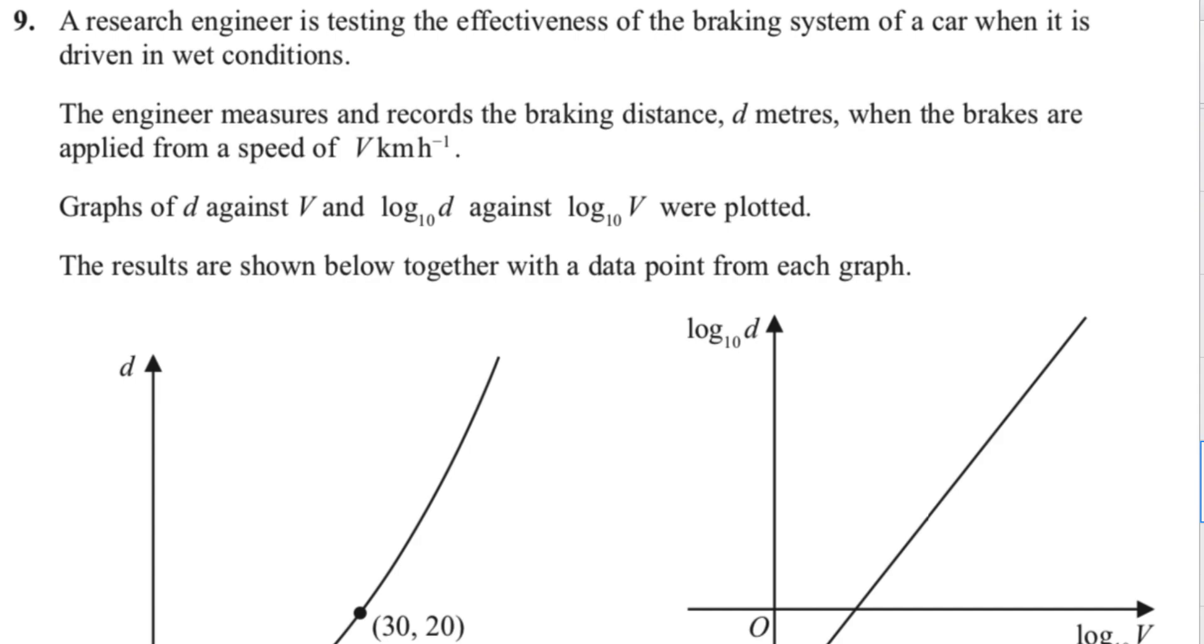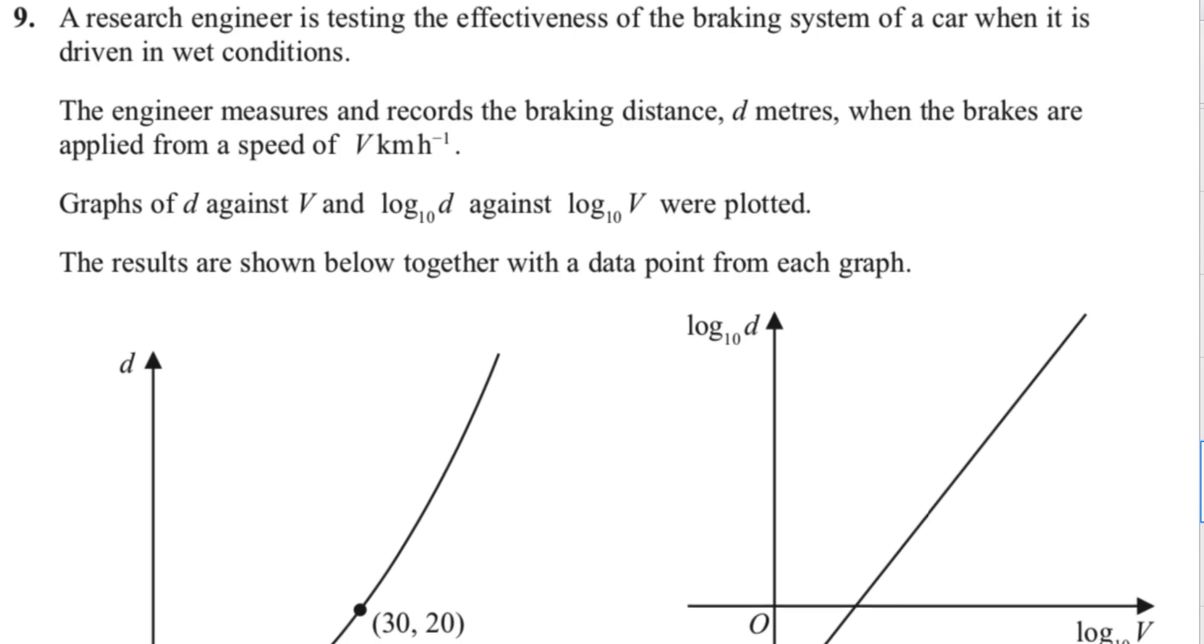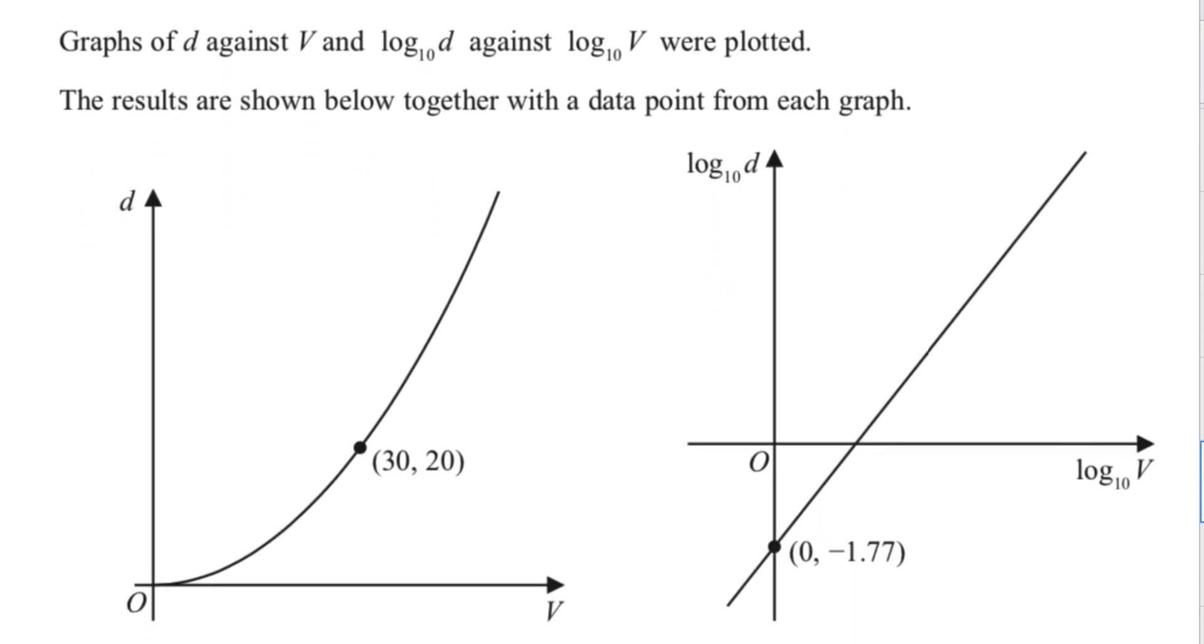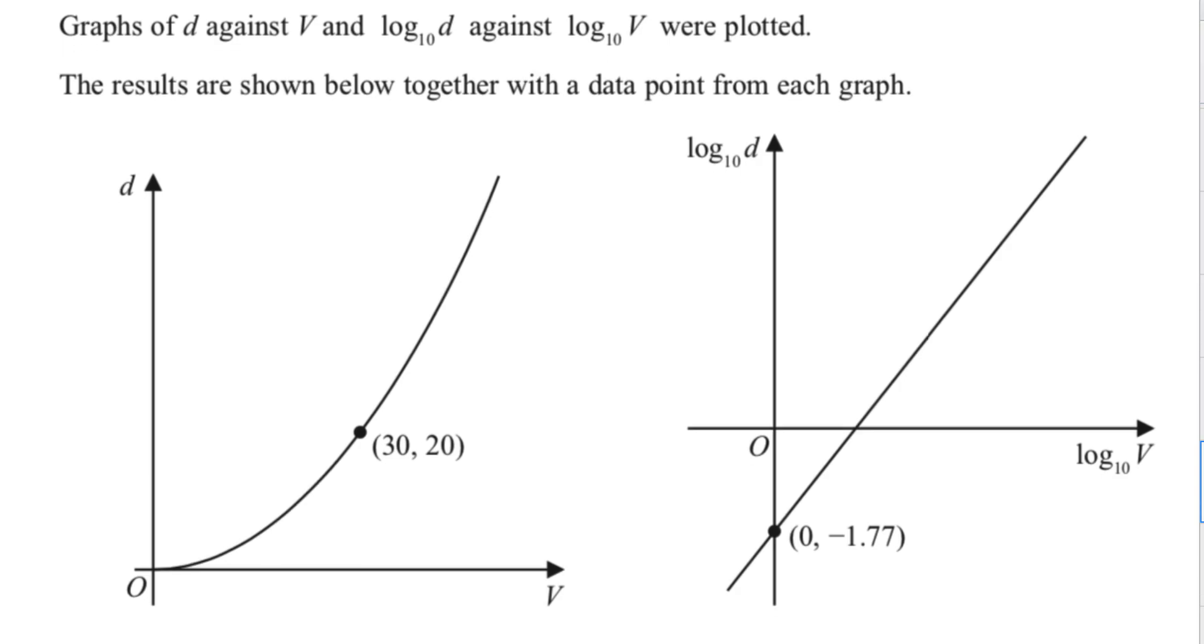It measures the braking distance when the brakes are applied at different velocities and it's given us the graph of d against v, but it's also given us the graph of log base 10 of d against log base 10 of v, and if you notice here it's produced a straight line.